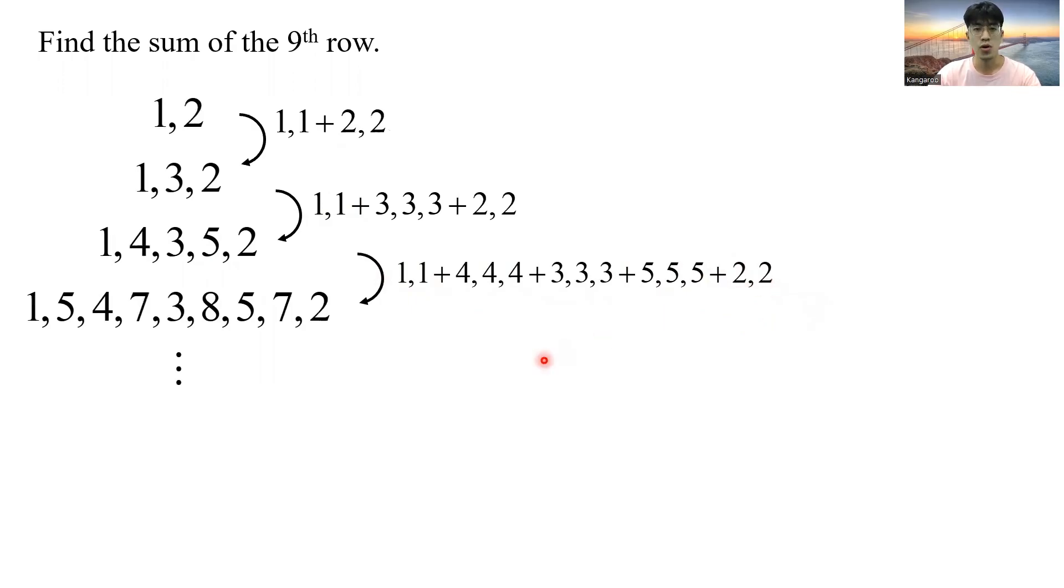Therefore, we can conclude that the sum of the next row is just the previous sum multiplied with 3, since all numbers have been counted three times. But then for the first and the last term, the 1 and 2, they have been only counted for two times. So I have to take away 1 plus 2. And this is where the pattern comes from.